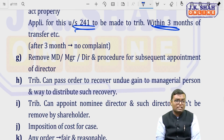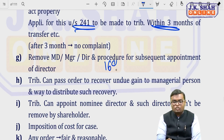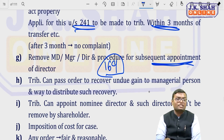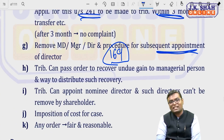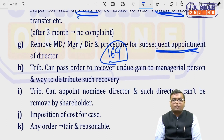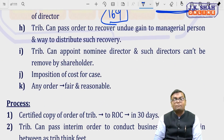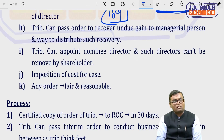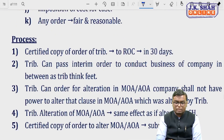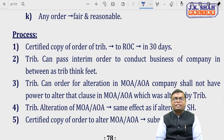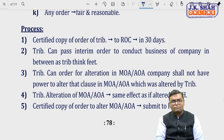The tribunal can also remove the MD, manager, or director and appoint new directors in their place. A certified copy of the tribunal's order must be submitted to ROC within 30 days. The tribunal can pass interim orders to allow the business to continue during proceedings before the final order. The tribunal can also order alteration of the MOA and AOA — and once altered by the tribunal, no other person has the power to alter such alteration.